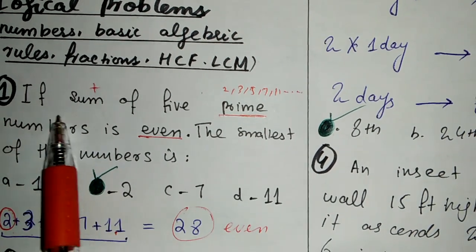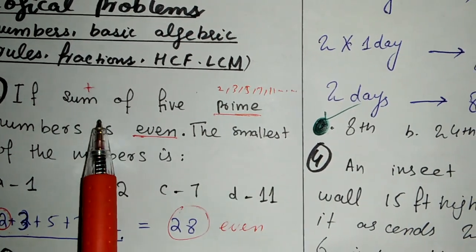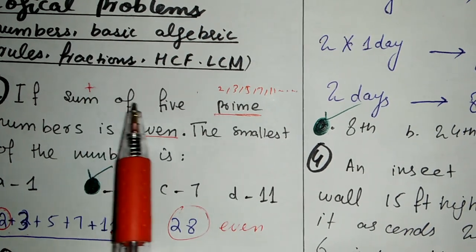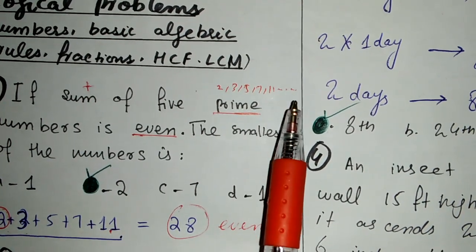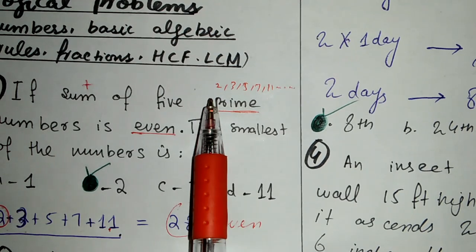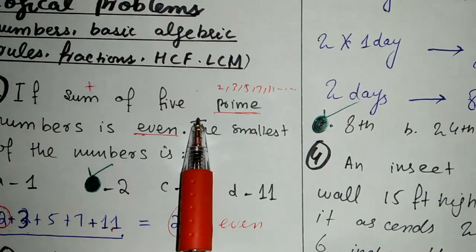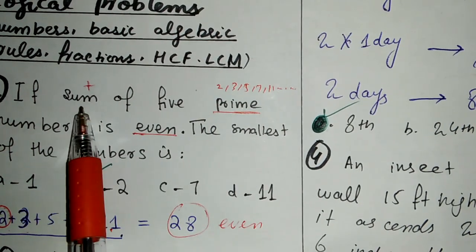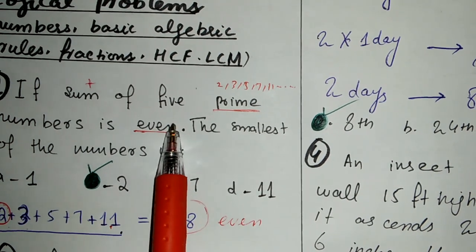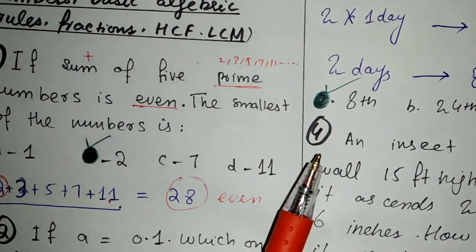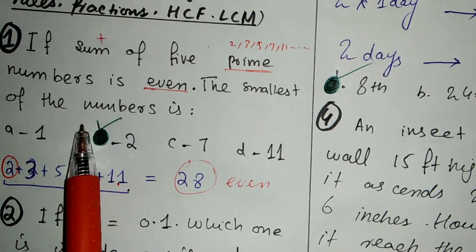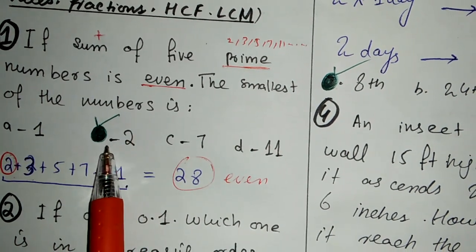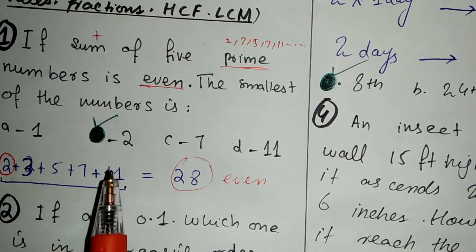The first example is the sum of 5 prime numbers. We have to add them up. The first five prime numbers are 2, 3, 5, 7, and 11. Remember, 1 is not a prime number. We add these five prime numbers together, then find the smallest of these numbers.